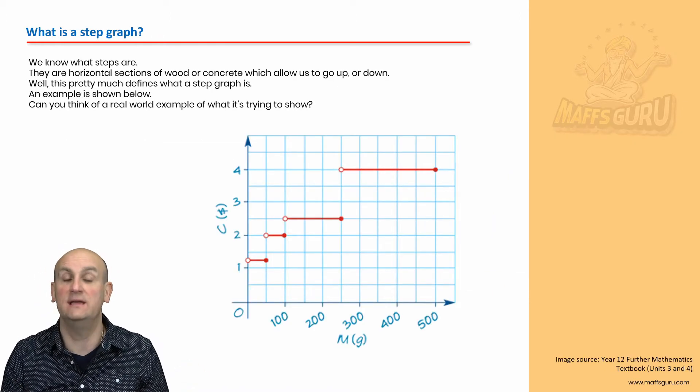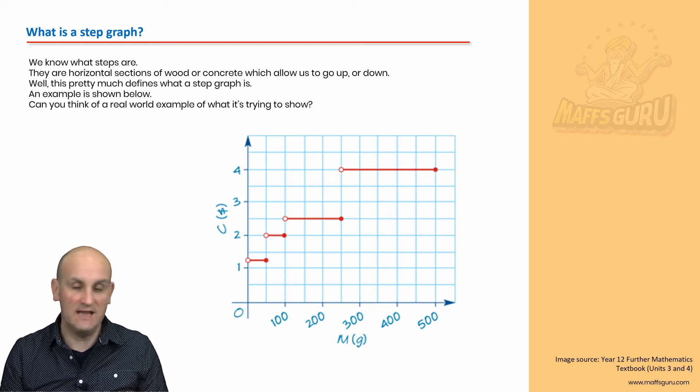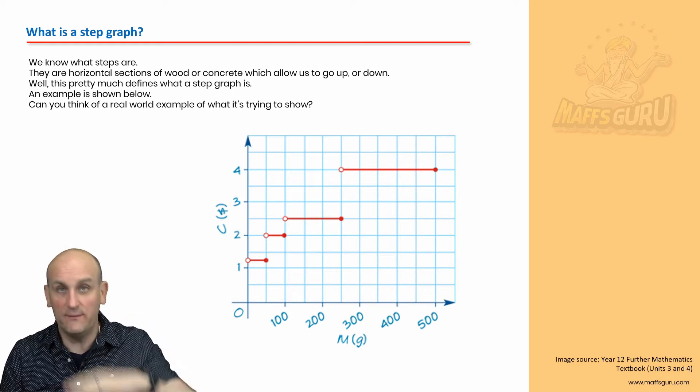There were axes and there were labels of axes and all this type of stuff. So how is it much different from a step graph? Well, as you can see behind me, here is a step graph. Now, I don't know about you, but steps, I go up or I go down. And steps are fairly flat.